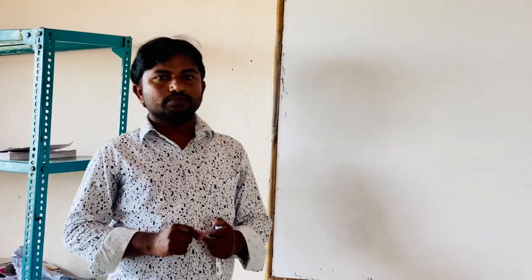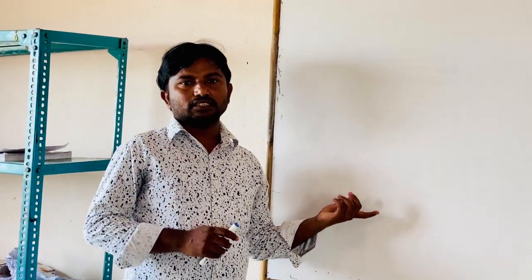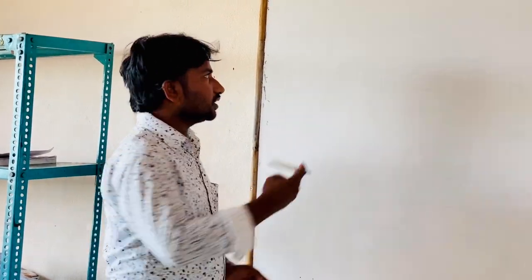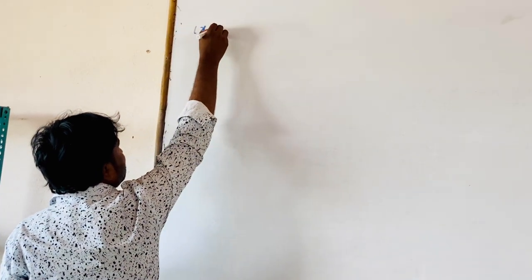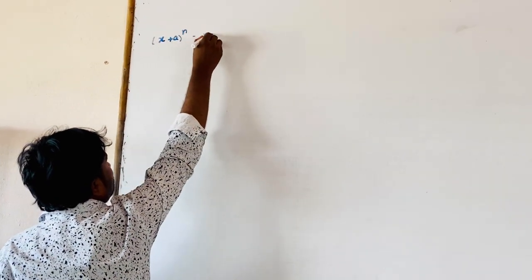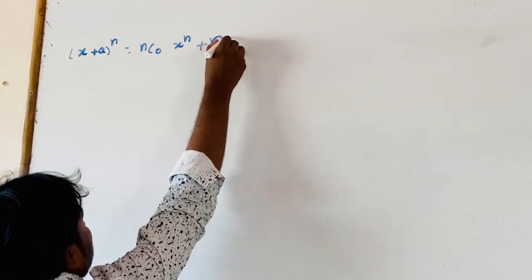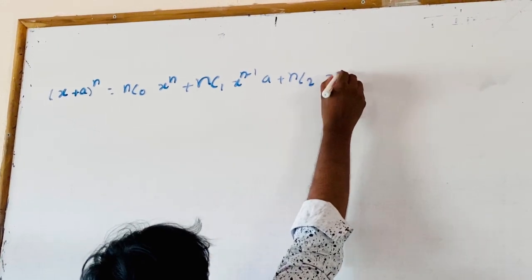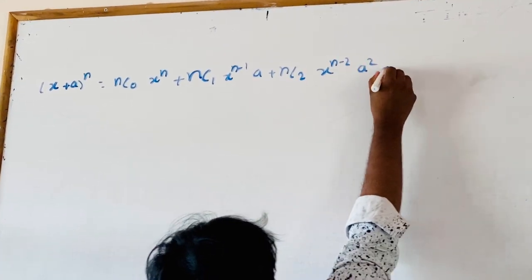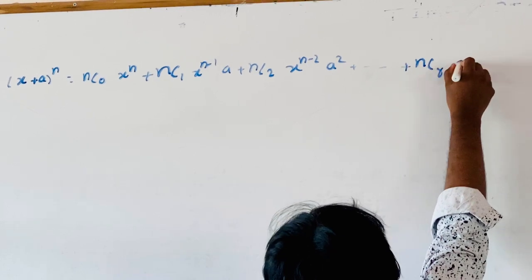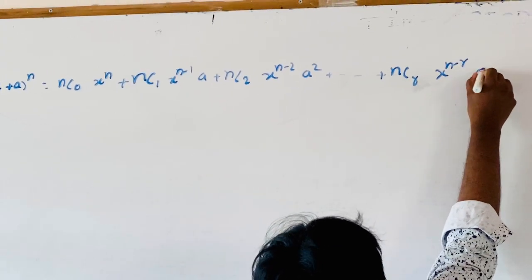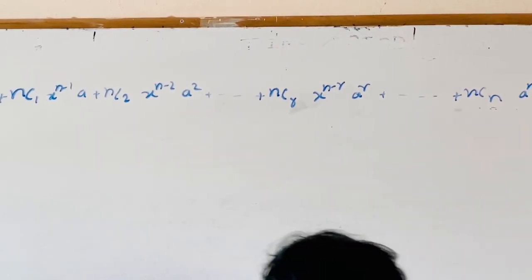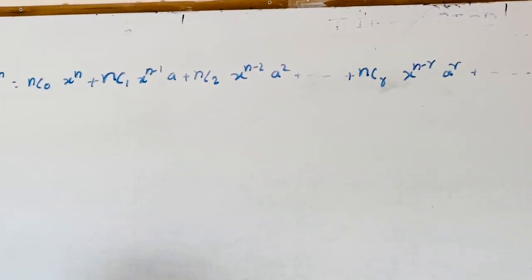Good morning students. Now in the previous class we discussed the binomial expansion of (x + a)^n. You know that the binomial expansion of x plus a all power n is equal to NC0·x^n plus NC1·x^(n-1)·a plus NC2·x^(n-2)·a^2 and so on, NCR·x^(n-r)·a^r and so on, NCN·a^n. This is the binomial expansion of (x + a)^n.